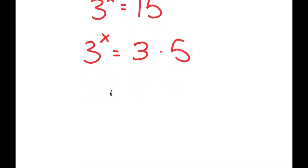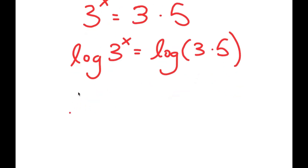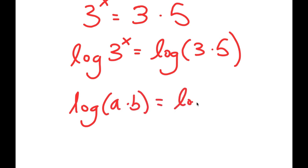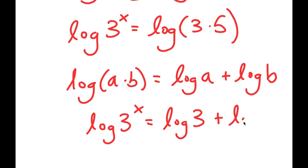Now I'm going to take the log on both sides. So I get log of 3 to the power of x is equal to log of 3 times 5. And if I have something in the form log(a times b), this is equal to log a plus log b. So log of 3 to the power of x is equal to log 3 plus log 5.